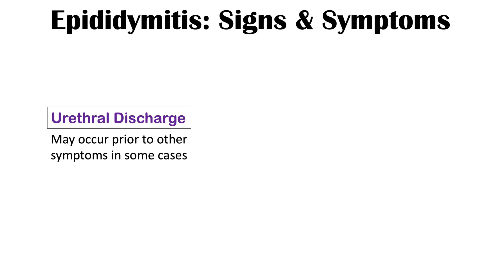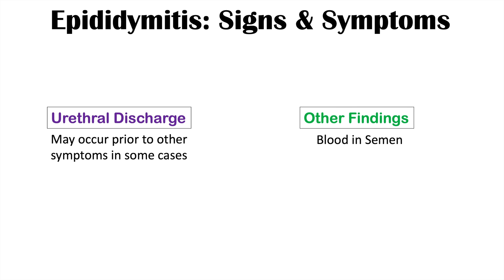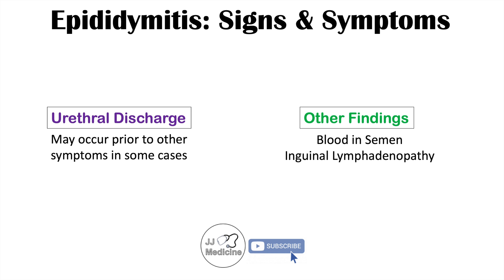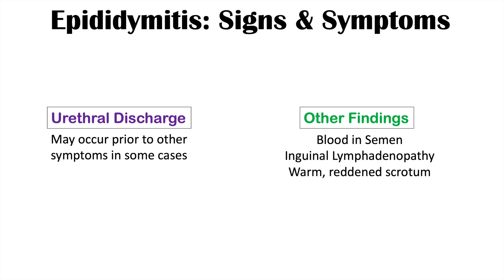Other signs and symptoms include urethral discharge, which can occur prior to other symptoms, particularly in cases caused by Chlamydia trachomatis or Neisseria gonorrhea. Additional findings that may occur in some patients include blood in the semen, inguinal lymphadenopathy with swollen and tender lymph nodes in the groin, and the scrotum may become warm and reddened.